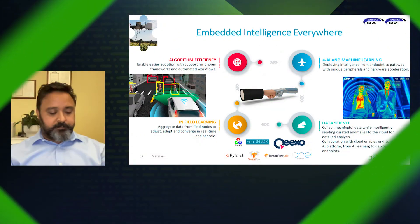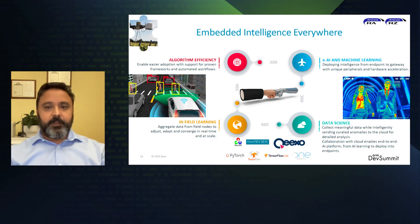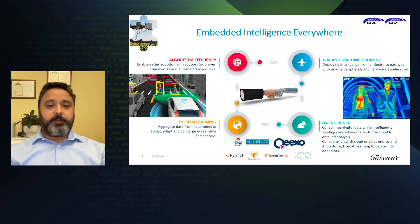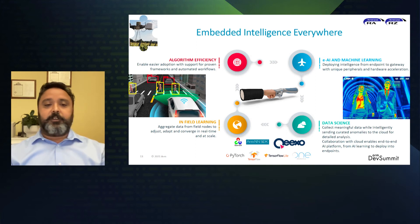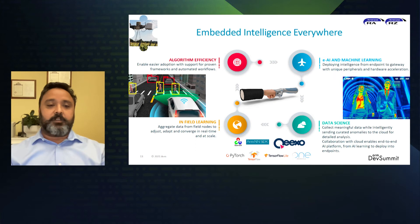Thank you. To proliferate embedded intelligence at scale, there are a few prerequisites. The first is algorithm efficiency — our approach lowers the barrier for adoption by using proven AI frameworks, automated workflows, and cloud-based machine learning platforms. We improve both compute efficiency and power efficiency with our proprietary IP built around DRP-AI hardware, the DRP-AI translator tool, and vision AI applications. A side benefit is that it accelerates development, shortens time to market, and reduces total cost of ownership.